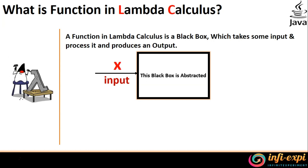Let's say the input is going to be X. I am going to help you explore Lambda Calculus from a mathematical point of view. X goes inside the black box, which does its processing, and then produces an output of X plus 1. So you give an input called X and you get an output called X plus 1. What happens inside that black box is not revealed, because Lambda Calculus is all about abstracting the actual process inside the functionality.